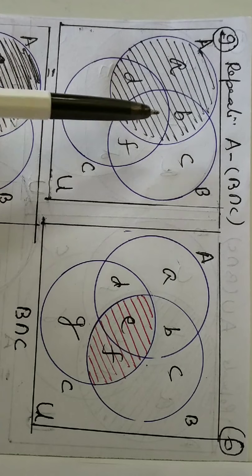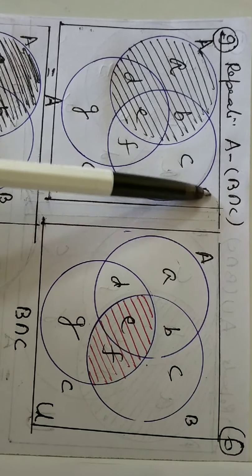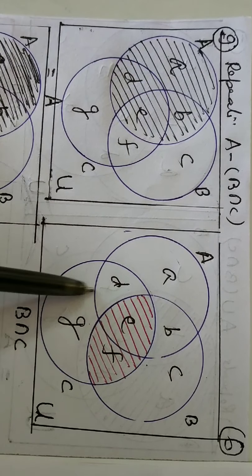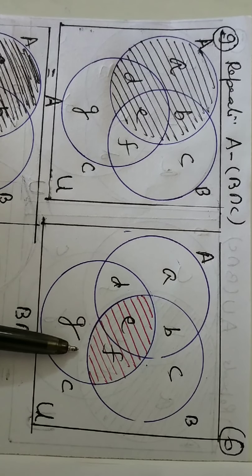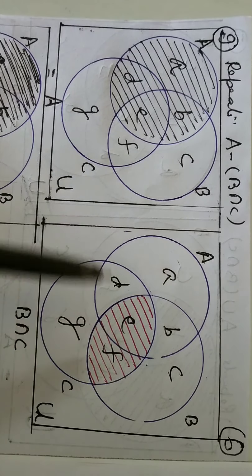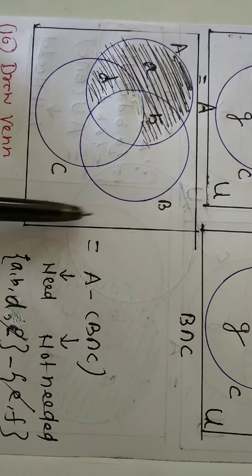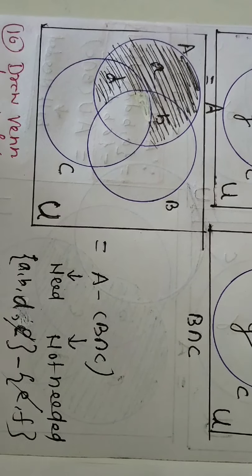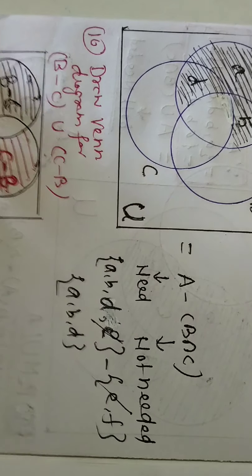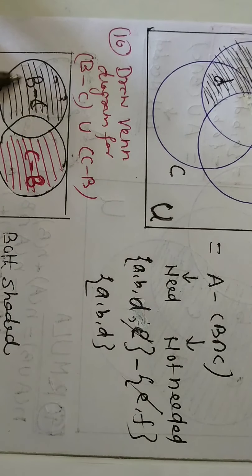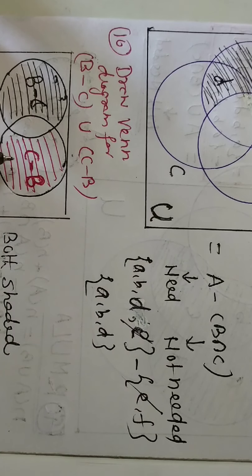Repetition: A minus B intersection C. This is your A, this is your B intersection C. From A, the B intersection C portion goes outside, and what remains is A minus B intersection C. Now, tenth: draw the Venn diagram of B minus C and C minus B. The region where C is removed from B is called B minus C; and where B is removed from C is called C minus B. Together they represent B minus C union C minus B.